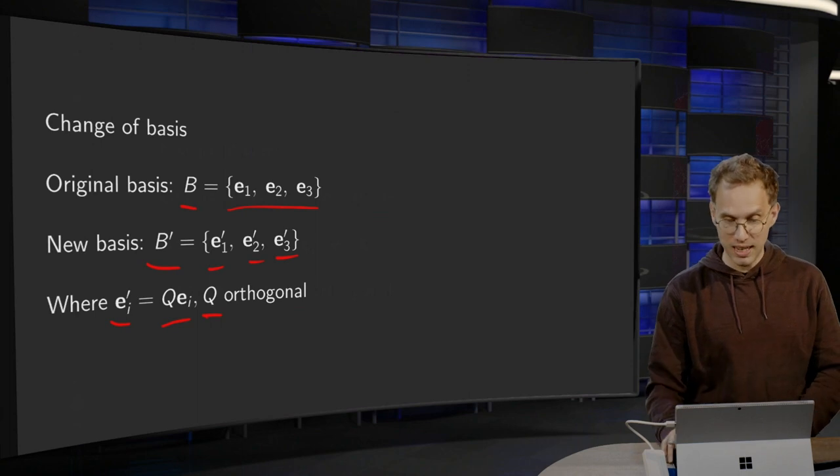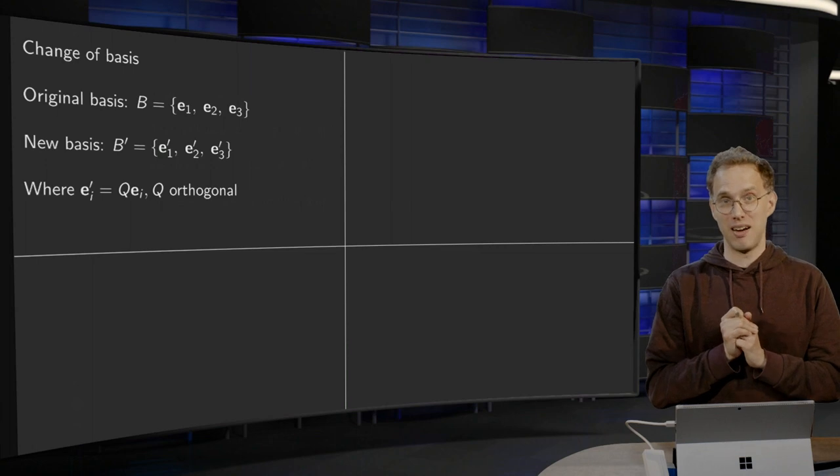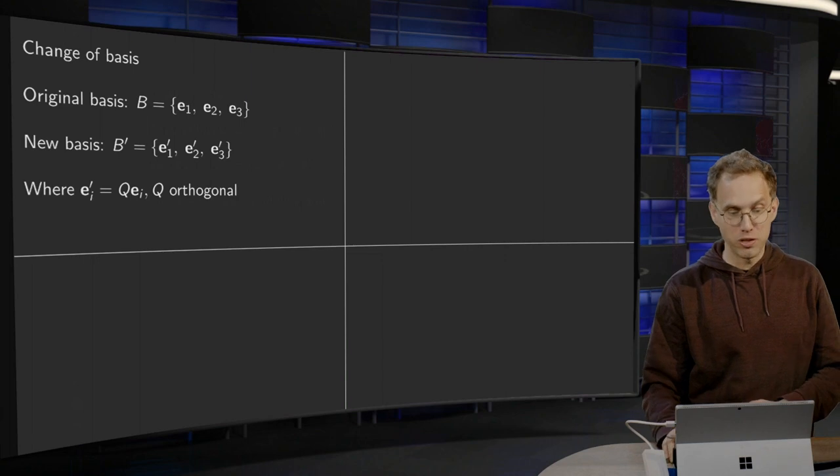Such that EI' = Q*EI. So that is how we are defining our new basis. But what does this mean for example for the components of Q?